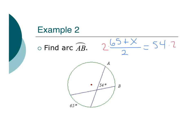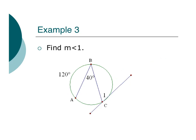So it would be the same steps. It's just the setup that's different on this one. Multiply by 2 on each side, and I end up with 65 plus x equals 108. Subtract 65, and I get x equals 43. So my arc is 43 degrees. Bada boom, bada bing.